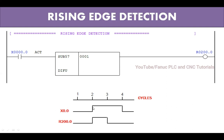When you make X0.0 high, at that time R200.0 is also high, but you can see it is only high for one cycle. After that it is low. Even if X0.0 is continuously high later on, R200.0 is high for only one scanning cycle. Understood?